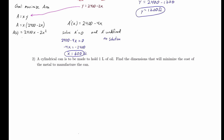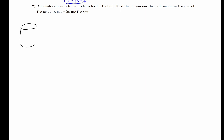Moving on to the next problem: a cylindrical can is to be made to hold 1 liter of oil. My diagram is going to be a cylinder. Since it's made to hold 1 liter of oil — and that's a volume — I'll write down that volume of a cylinder is pi r squared h, with radius r and height h labeled. We want to find the dimensions that will minimize the cost of metal to manufacture the can, so our goal is to minimize surface area.